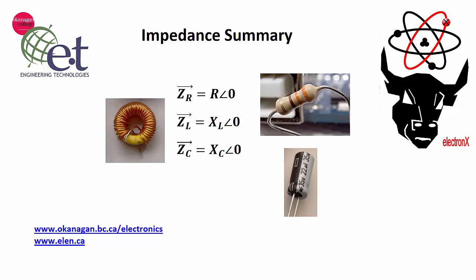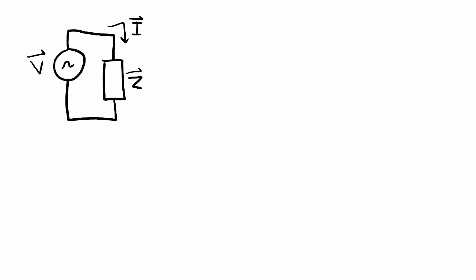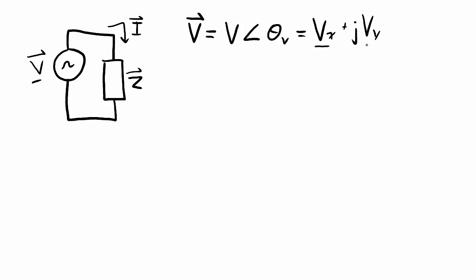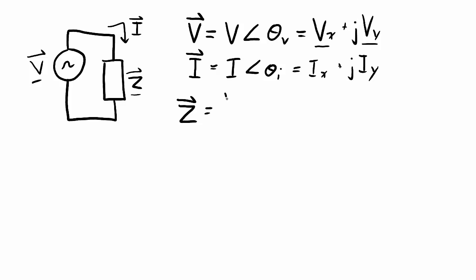Impedance describes the relationship between voltage and current for inductors, capacitors, and resistors specifically when voltages and currents are sinusoidal. If I have a sinusoidal voltage source, I can describe that voltage source as a phasor — with some amplitude and phase angle, or equivalently a real and imaginary component. That voltage gets applied across an impedance which impedes the current, and the resulting current is also a phasor with a magnitude and phase angle. The impedance Z is the ratio of voltage over current.